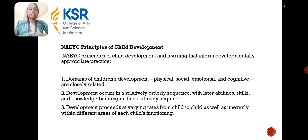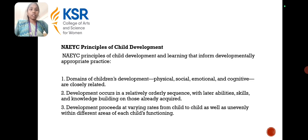What is the NAEYC principle? The domains of children's development include the physical, social, emotional, and cognitive. Cognitive is totally related to brain development, and these three domains — physical, social, and cognitive — are closely related.